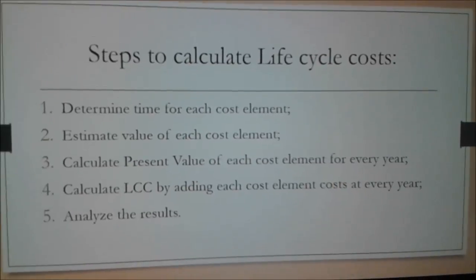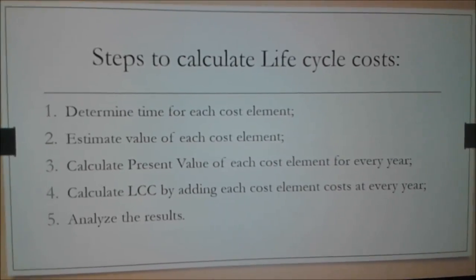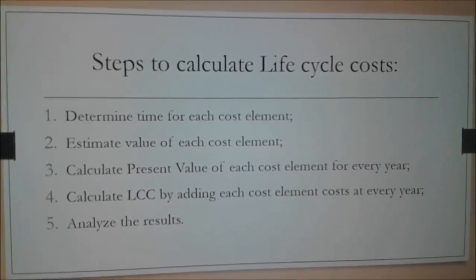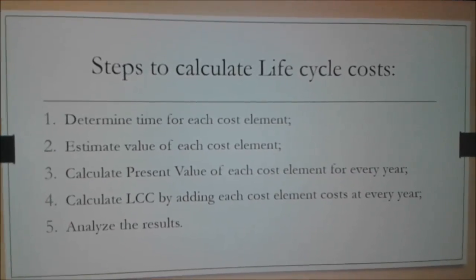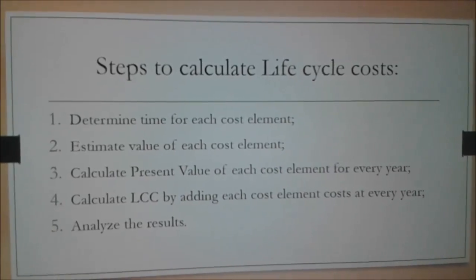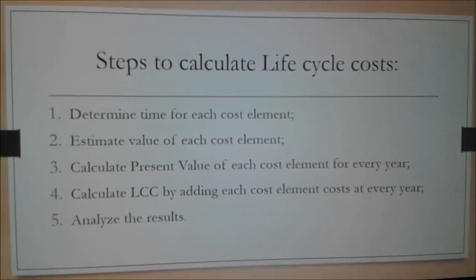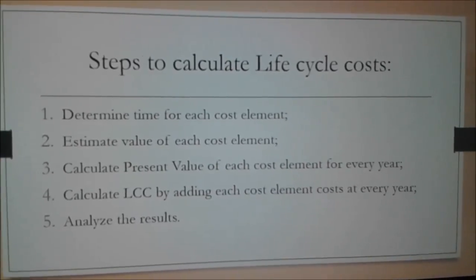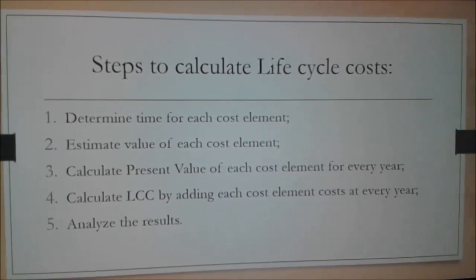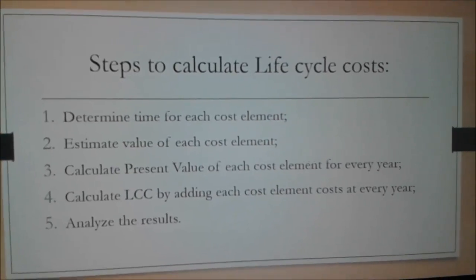Now let's review the five basic steps for calculating life cycle costs. First, we need to determine the time period for each cost element — for example, if we are going to produce a new product, we need to determine for how long we are going to be producing it. Then, we need to estimate the value of each cost element — for example, what are the labor costs going to be every year if we choose to produce the product.